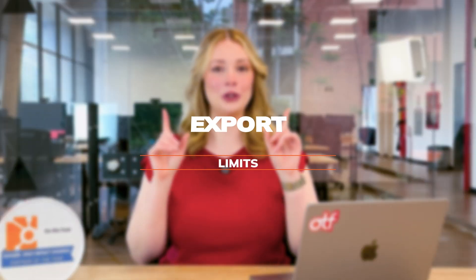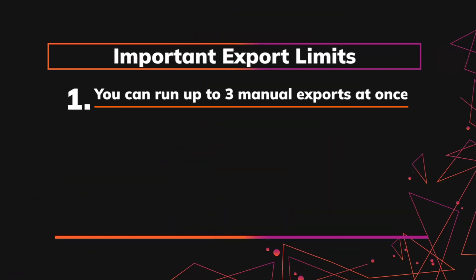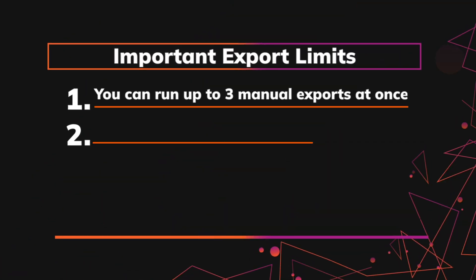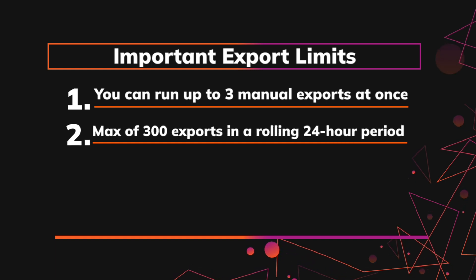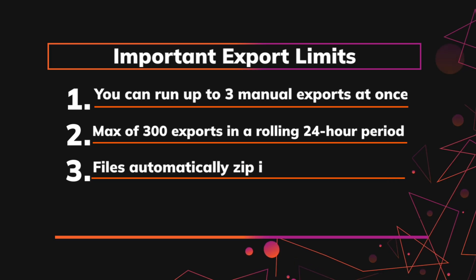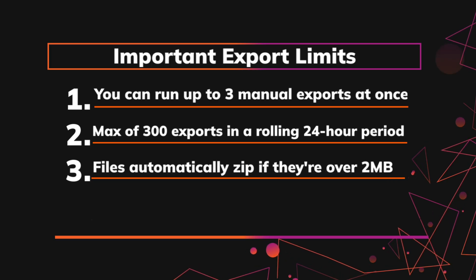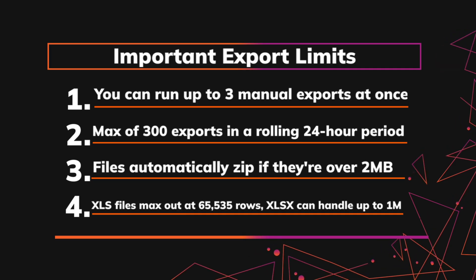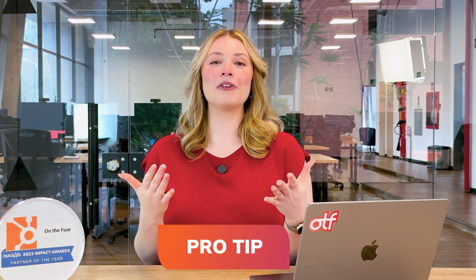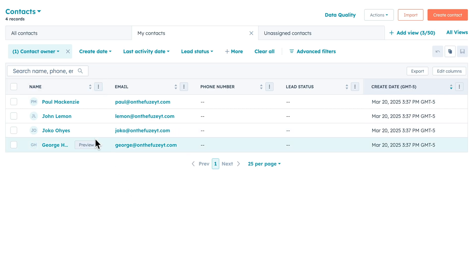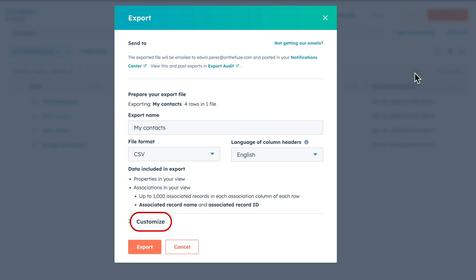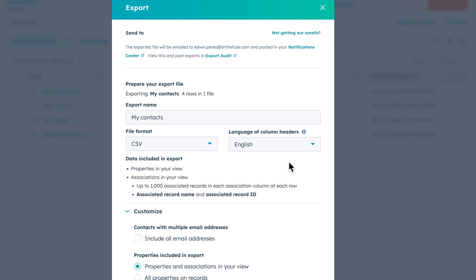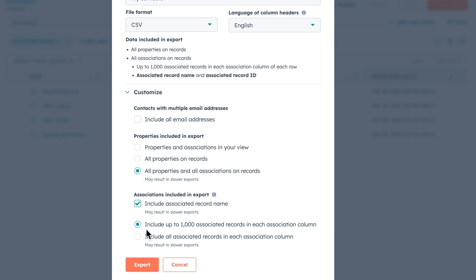Here are the limits you need to know. You can run up to three manual exports at once, with a maximum of 300 exports in a rolling 24-hour period. CSV files automatically zip if they're over two megabytes. XLS files max out at 65,535 rows, while XLSX can handle up to 1 million rows. Pro tip: by default, HubSpot only exports properties visible to your current view and a limited number of associated record IDs. If you need absolutely everything, make sure to select all properties and associations on records in your export dialogue.